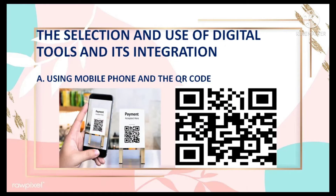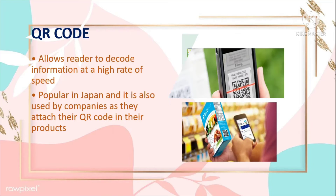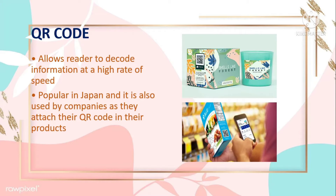QR codes are now popularly used in different products, reading materials, and even in museums. QR stands for quick response, effectively and efficiently connecting the physical world with the electronic world. Developed by the Japanese company Denso Wave in 1994, it is a type of barcode that can be read easily by a digital device and which stores information as a series of pixels in a square-shaped grid. It allows the reader to decode information at a high rate of speed and is often used in marketing and advertising campaigns.